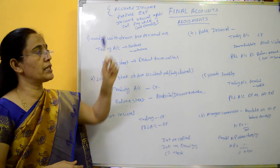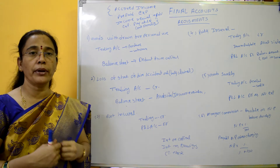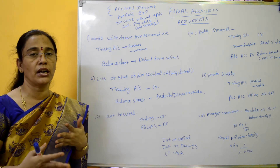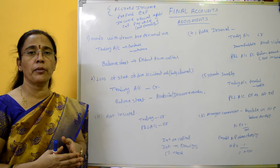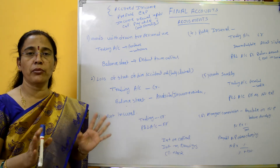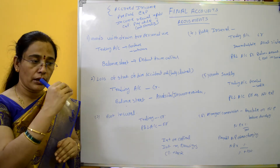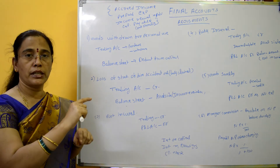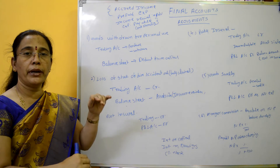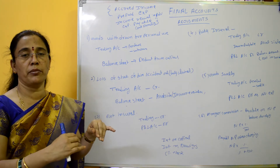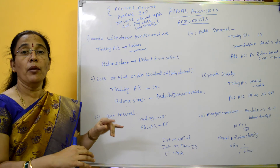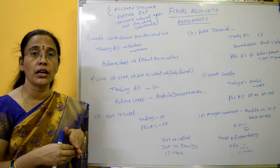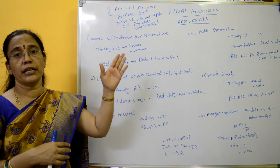Next, prepaid expenses — such as prepaid wages, prepaid salaries, prepaid insurance. If you prepare expenses for a particular year, you reduce the amount of prepaid expenses from the profit and loss debit side, and show the prepaid amount as an asset on the balance sheet.